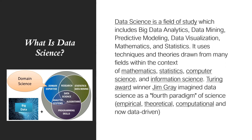If you look at the diagram on the left-hand side, you can see there is something called statistics and data mining. We also have research, domain expertise, analytic systems, programming skills, and algorithms — all converging toward data science. So data science uses all these techniques, including big data, domain expertise, statistics, and data mining. Most machine learning algorithms like classification and regression involve statistics and data mining.